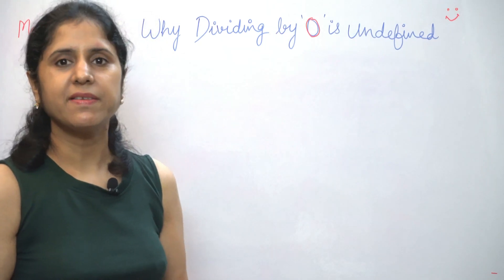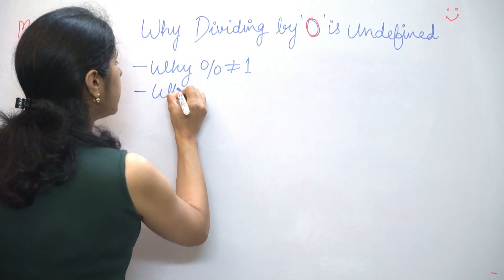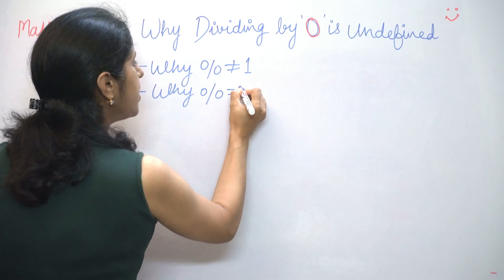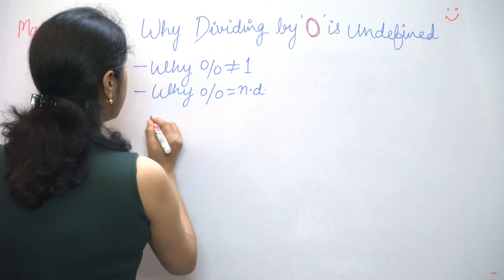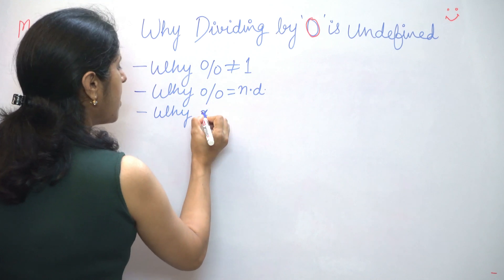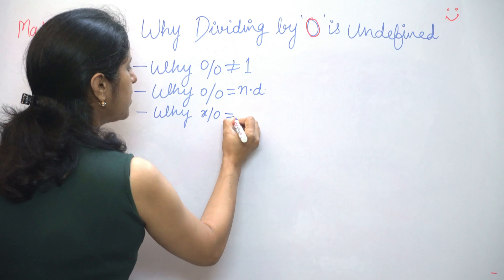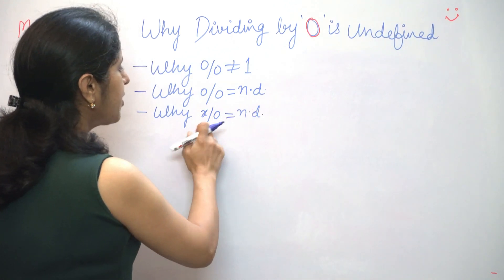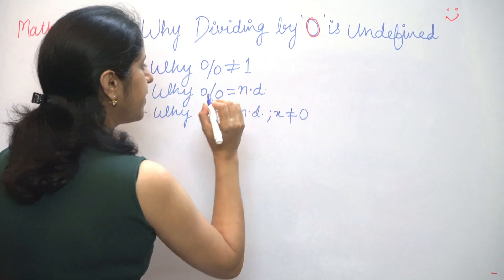The first is why 0 by 0 is not equal to 1. The second is why 0 by 0 is not defined. And the third is why any other number, say x divided by 0, is not defined. Here we have taken any other number which means x is not equal to 0.